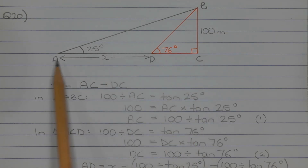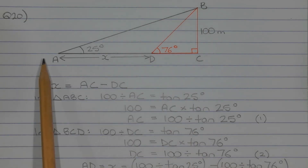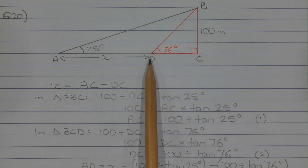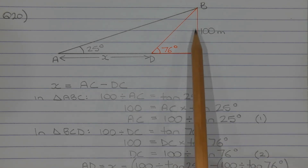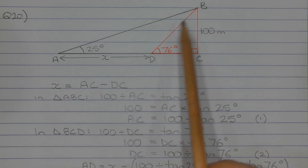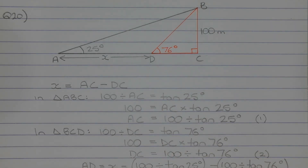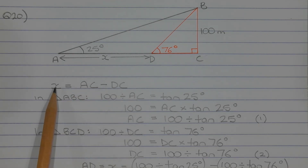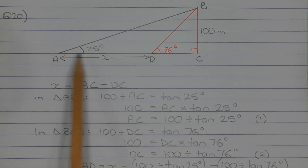Interval AC belongs to the large triangle, triangle ABC, and interval DC belongs to the smaller triangle, triangle BCD. It's important to note that interval BC is a common side for both triangles ABC and BCD. The strategy is to work out the length of these two intervals separately and then do AC minus DC to work out X, which represents the length of interval AD.